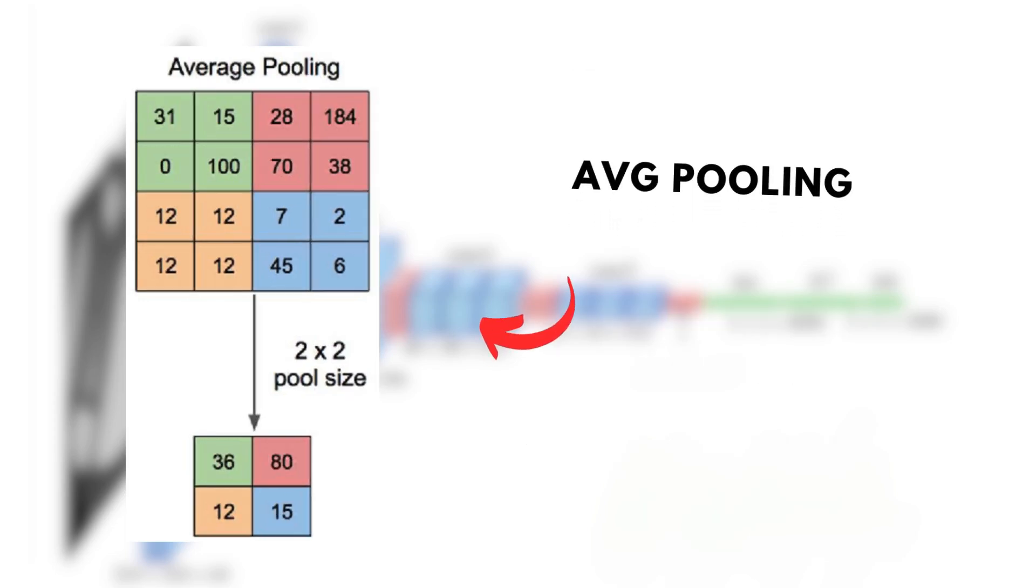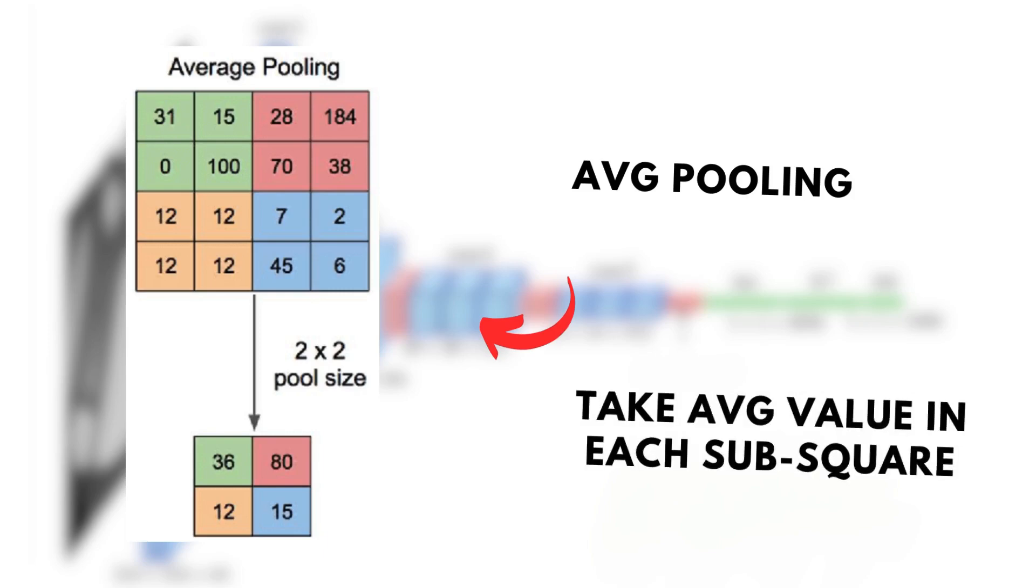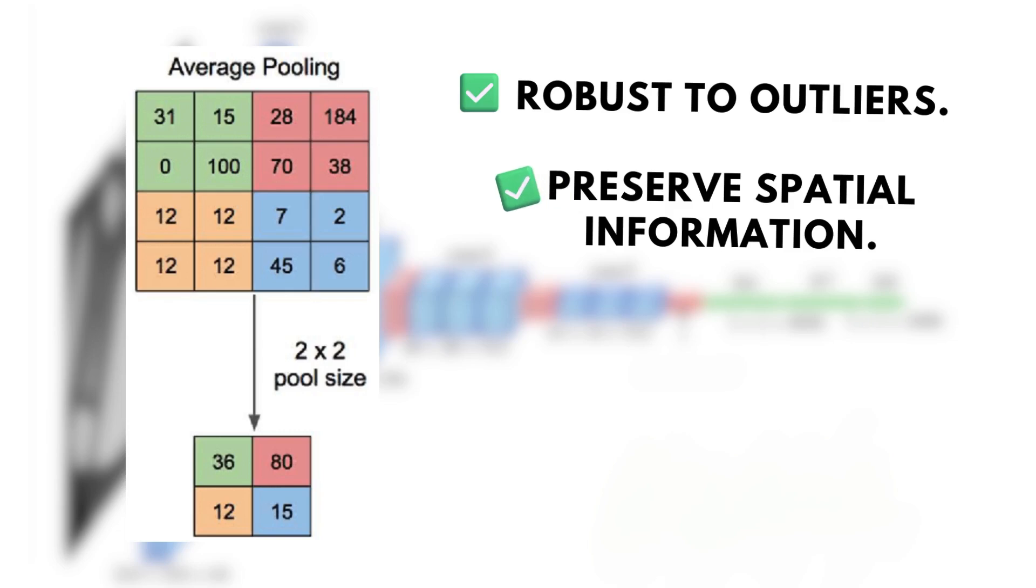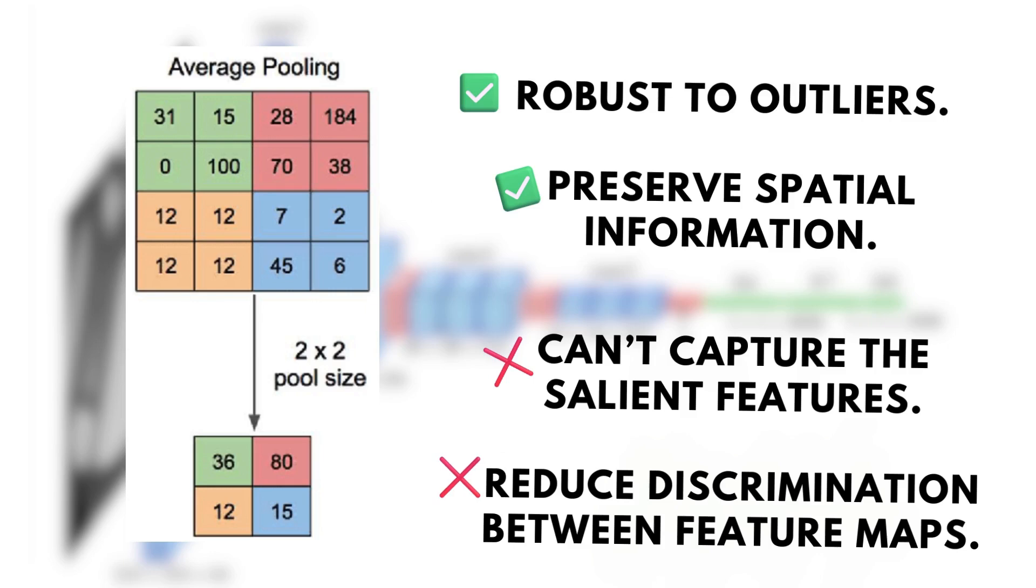Whenever the image has a more subtle feature, it might be more useful to use average pooling. The operation is also straightforward. We take the average value in each of the 2x2 squares and store the result in the output layer. This pooling operation is robust to outliers and preserves spatial information better. The downsides are that average pooling has more difficulty capturing salient features and that there is a reduction in discrimination between feature maps caused by the averaging operation.